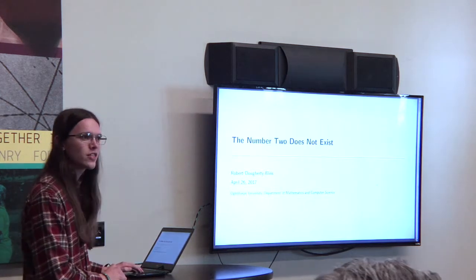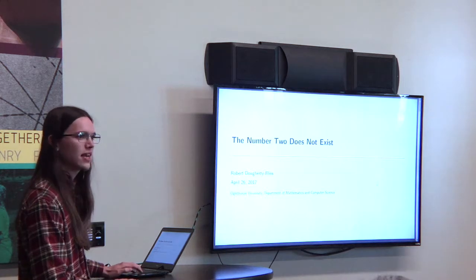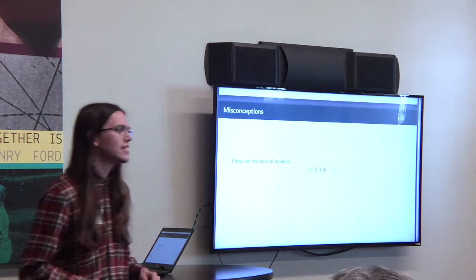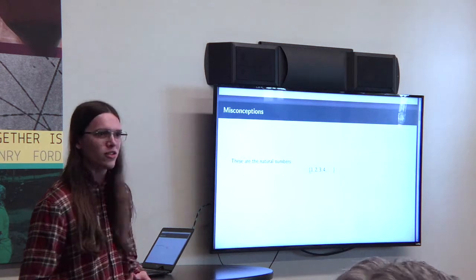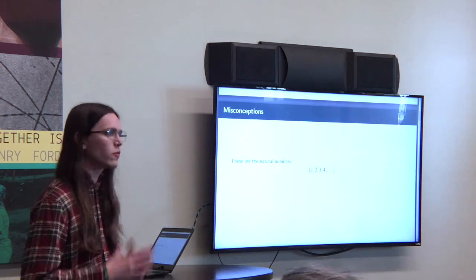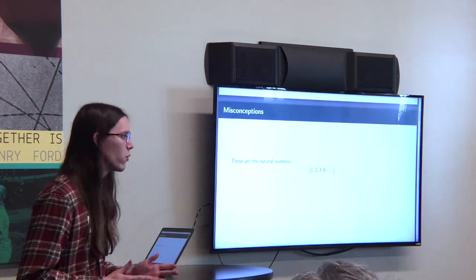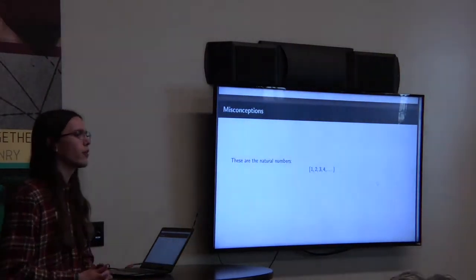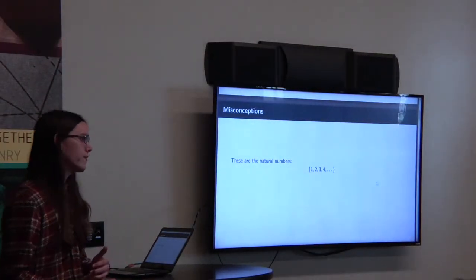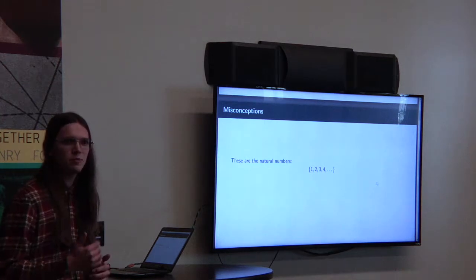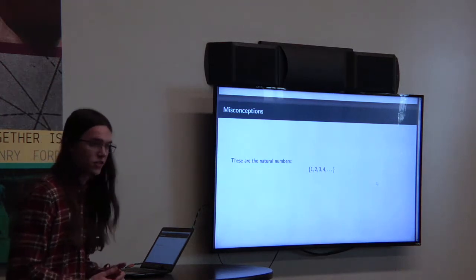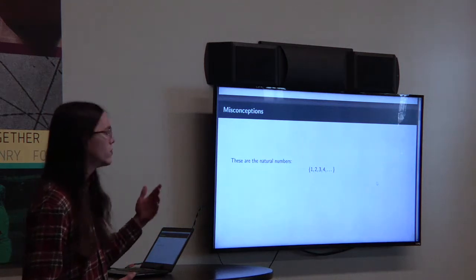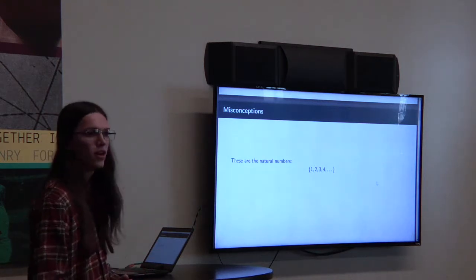This is a pretty bold claim, so let's talk a little bit more about what we mean when we say the number two does not exist. Is everyone here familiar with numbers? Like ranking up one, two, negative four, things like that. I see a lot of nods — that's good. We don't need all of the numbers for this talk. We're just going to need a specific set called the natural numbers. They're the positive integers: one, two, three, four, and so on.